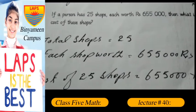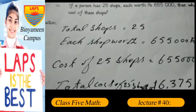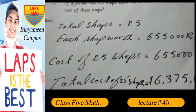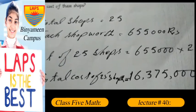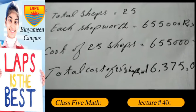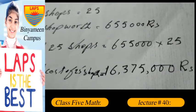First write: total shops = 25. Then each shop worth = 6 lakhs and 55 thousand rupees. Cost of 25 shops = 6